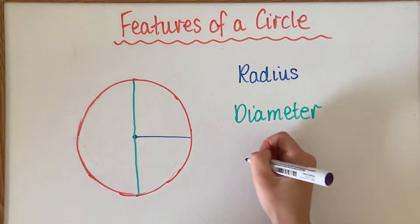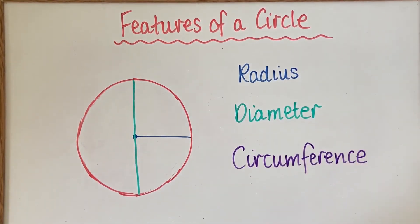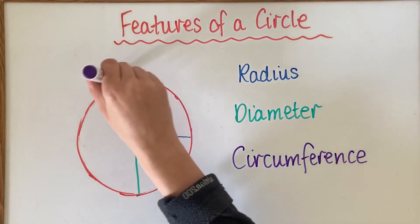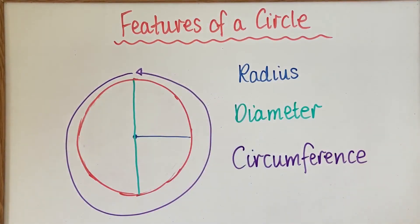The last feature is called the circumference. The circumference is similar to the perimeter of a shape, so it's actually the outside measurement of around the outside of a circle.